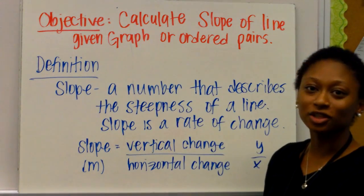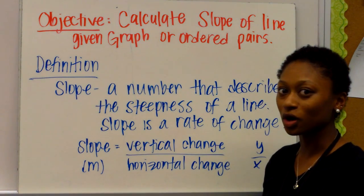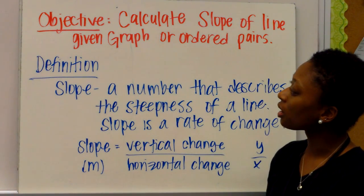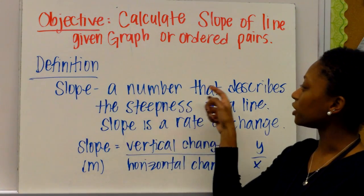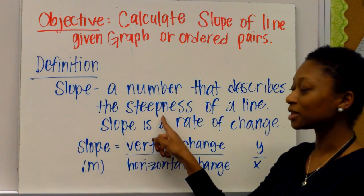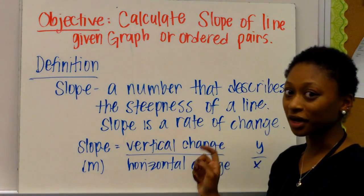Objective: Calculate the slope of a line if you're given a graph or two coordinate pairs. So the definition of slope: Slope is a number that describes the steepness of a line. It is an example of rate of change.